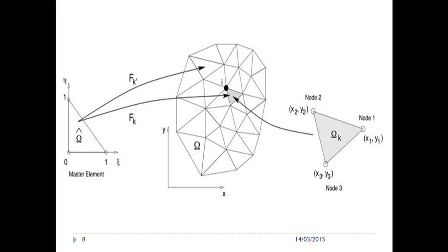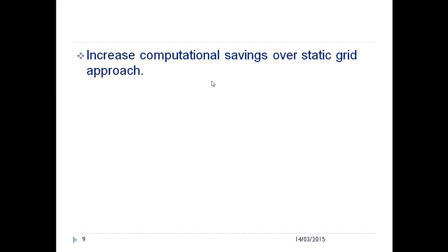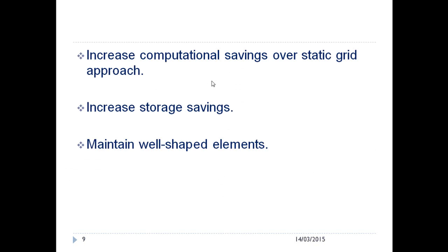With AMR, we can approximate the error in every element — that means in each triangle. Then we refine only the elements whose error is not tolerated, meaning we refine only these regions, because normally the error there is going to be too high. The adaptive mesh refinement increases the computational savings of a static grid approach, increases storage savings, and maintains well-shaped elements.